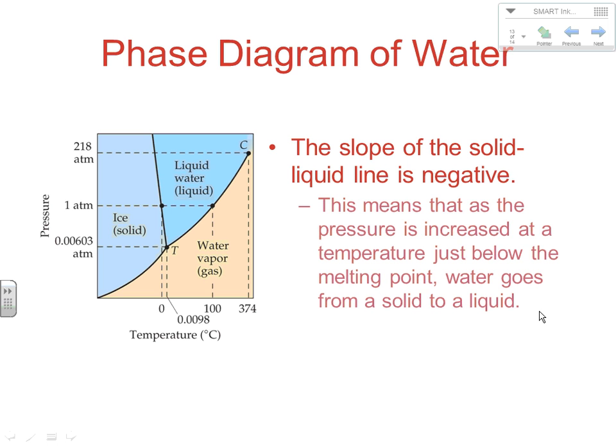Another important thing on the phase diagram — somewhat unique for water — is that the slope of the solid-liquid line is actually negative. In most substances, that slope is positive. For water, as you pressurize the solid, it can eventually change back to a liquid: push it close enough together and it moves from its crystalline solid shape into the more random but closer-together liquid state. Most substances except water have a positive slope on the melting point line, because as you pressurize something, you push it closer together and it goes from liquid to solid.